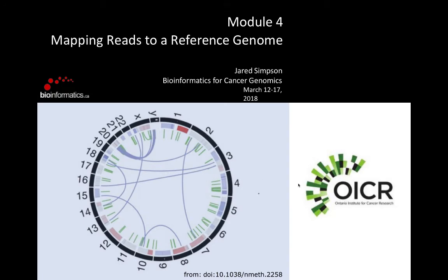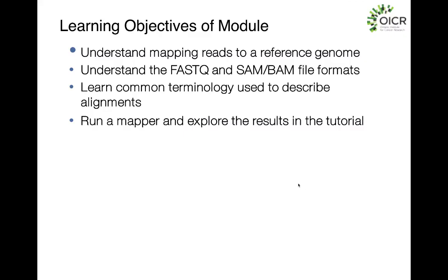Module four is talking about mapping reads to a reference genome. The learning objectives for this module are to understand how mapping reads to a reference genome works and how we generate these reads. We'll also cover some of the basic formats we use when mapping reads: the FastQ format and the SAM and BAM file formats. FastQ is usually your raw sequencing output, and SAM and BAM are the standard formats for alignments.